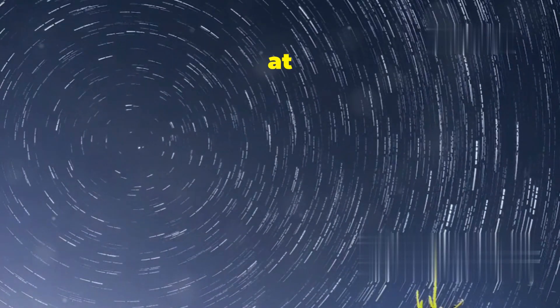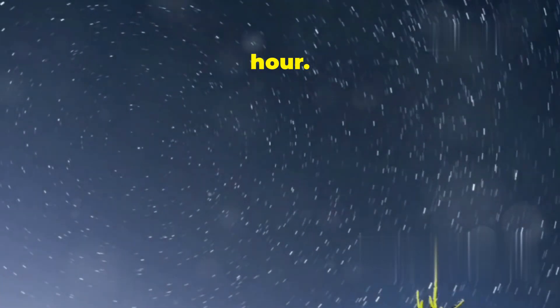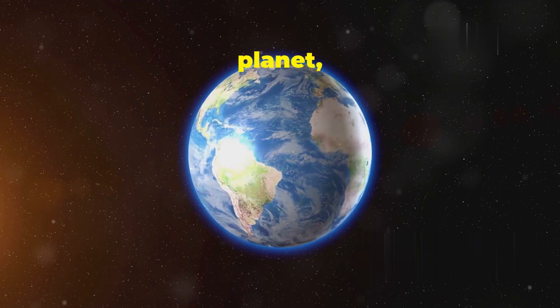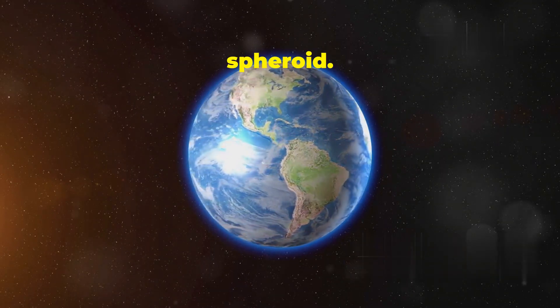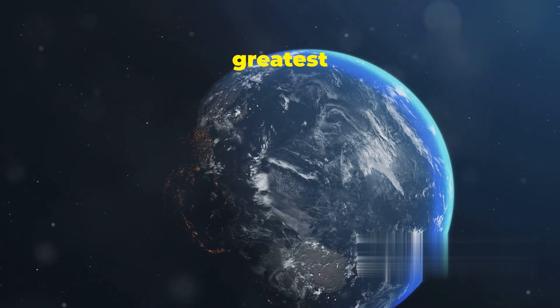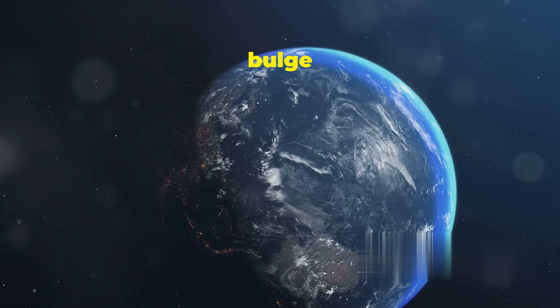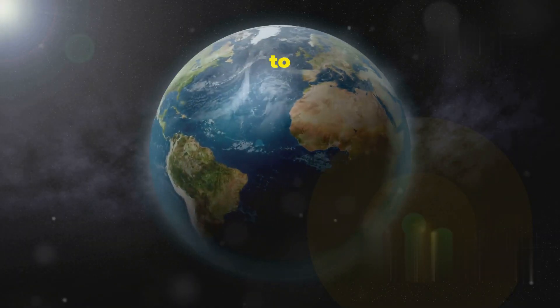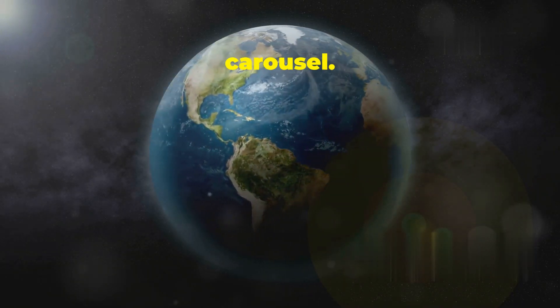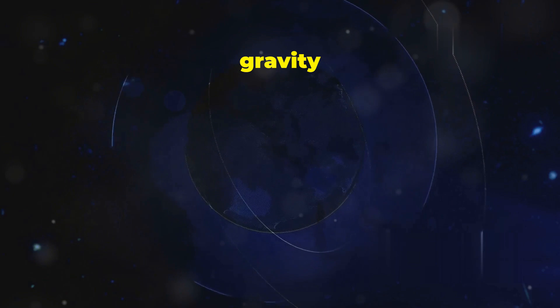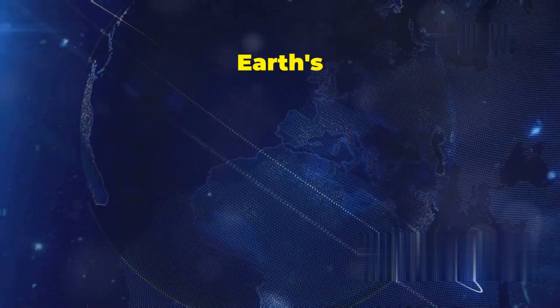Earth spins on its axis at roughly 1,000 miles per hour. This rotation shapes our planet, making it an oblate spheroid. Centrifugal force is greatest at the equator, causing it to bulge outward. This effect is similar to the outward push felt on a fast carousel. The balance between gravity and centrifugal force determines Earth's shape.